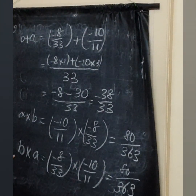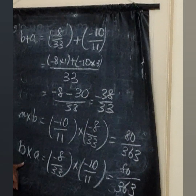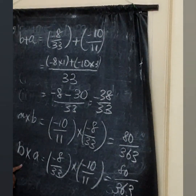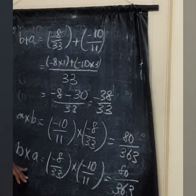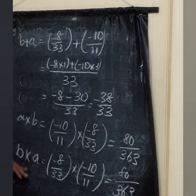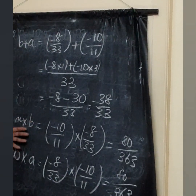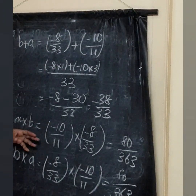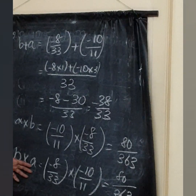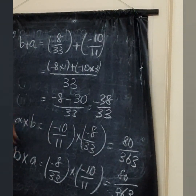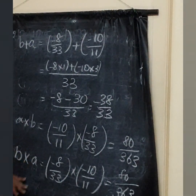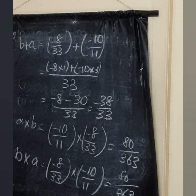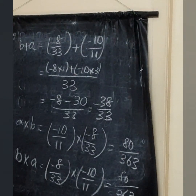A into B and B into A are both 80 by 363, so it satisfies the commutative property for multiplication. We have reached the end portion now. We will continue the remaining sums in the next coming week with the same exercise. Thank you, children. Stay tuned.